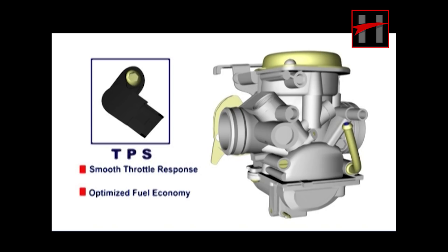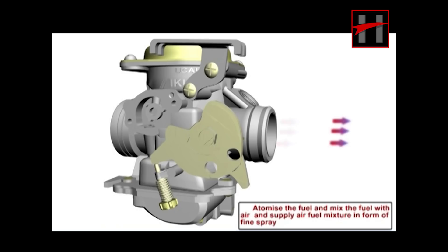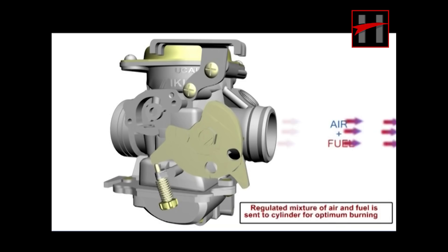One of the functions of a carburetor is to atomize the fuel and mix it with air, supplying the air-fuel mixture in the form of a fine spray. The regulated mixture of air and fuel is sent to the cylinder for optimum burning. The carburetor uses the principle of a sprayer.